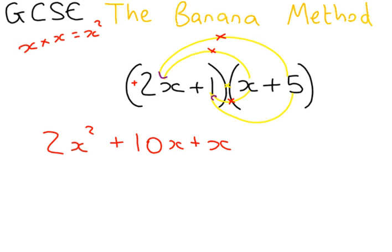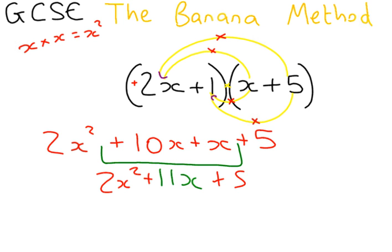The final one, 1 times 5, which is just 5. And it's a plus and a plus again. So that's the expand bit done. Now we've got 10x add x. So 10 lots of x add 1 lots of x is 11 lots of x. So our final answer is 2x squared plus 11x plus 5.